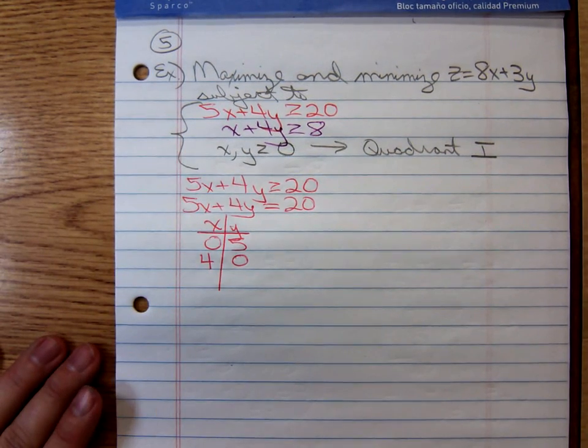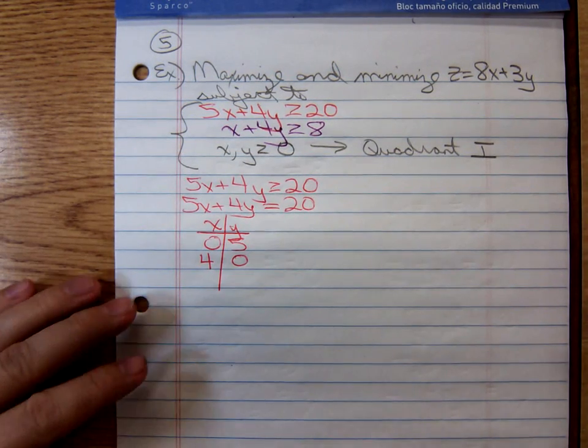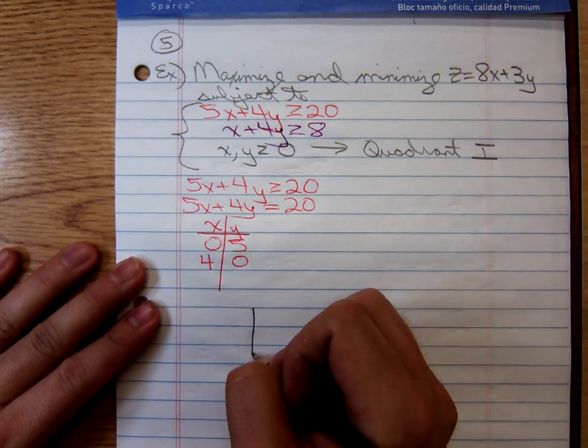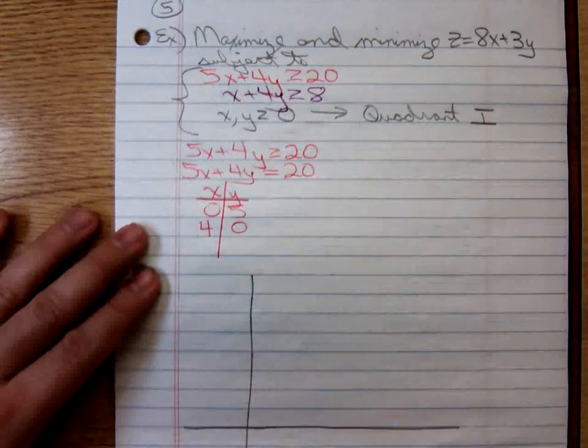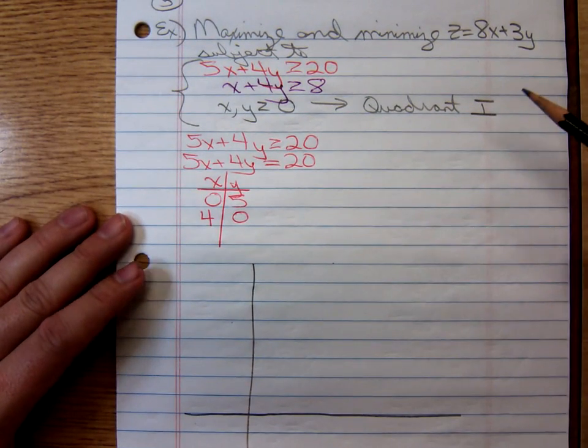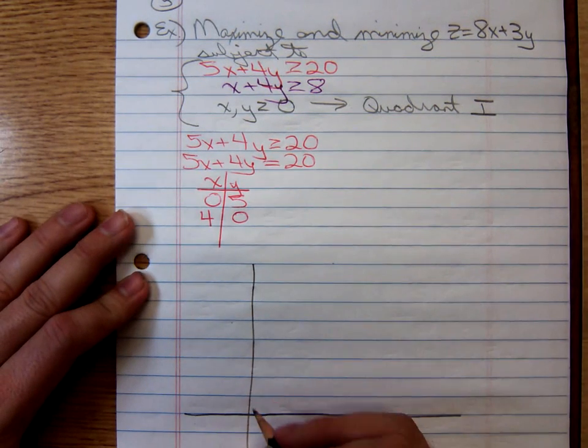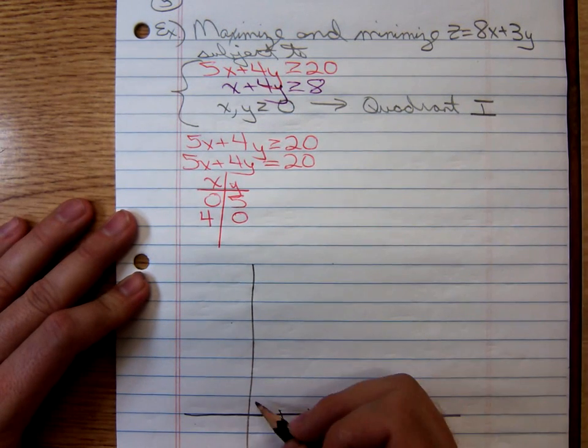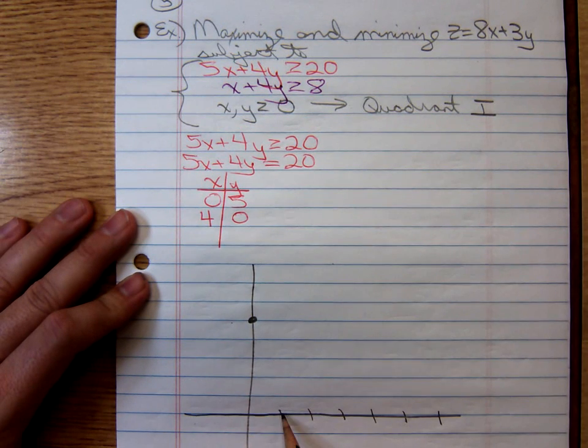I'll go ahead and I'll draw the graph right here. I'm going to draw myself my x, y grid right here. We're only looking in quadrant 1 because of those non-negativity constraints. So you'll notice I'm just making a nice big quadrant 1. So we have 0, 5, 1, 2, 3, 4. And then 4, 0, 1, 2, 3, 4 right there.